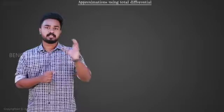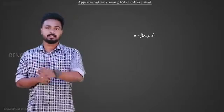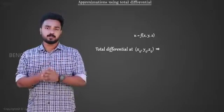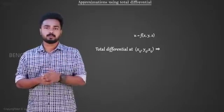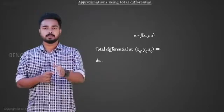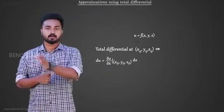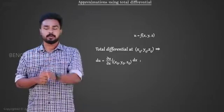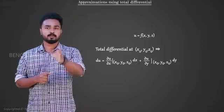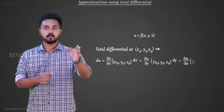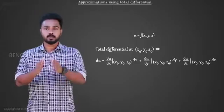Similarly, for a three variable function u is equal to f(x, y, z), the differential du at the point x0, y0, z0 can be given as du is equal to (∂u/∂x at x0, y0, z0) into dx plus (∂u/∂y at x0, y0, z0) into dy plus (∂u/∂z at x0, y0, z0) into dz.